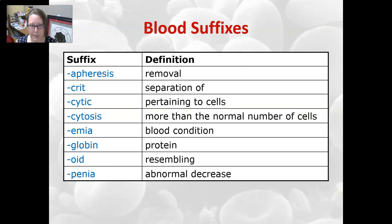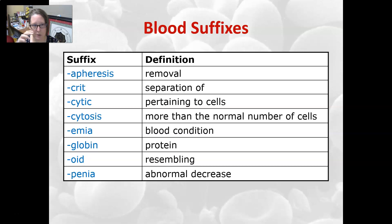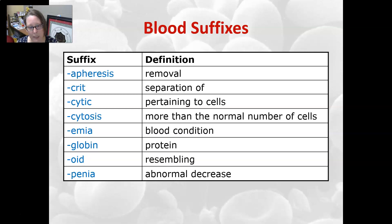Let's look at a few blood suffixes. Apheresis is the removal of something — so plasmapheresis is the removal of plasma from a unit of blood or from a person. Crit is separation of, and that comes from the hematocrit blood test, which looks at the percentage of cells versus a total volume of blood. Cytic is pertaining to cells, and cytosis is when there are more than the normal number of cells — so leukocytosis would be a high leukocyte count or high white count on a CBC. Emia refers to any blood condition, and we'll see that a lot in upcoming chapters. Globin means protein, or is a type of protein.